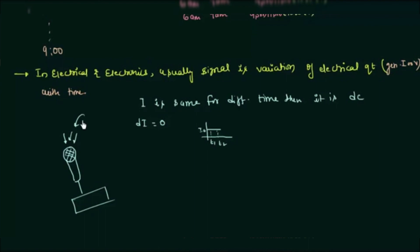There are many hundreds and thousands of types of signals, and we have just seen one example with temperature. In the next presentation, we will see what is an analog signal and a discrete time signal, and then finally we will cover the digital signal.